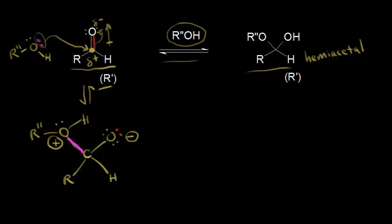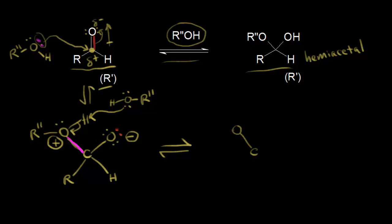The next step is to deprotonate this intermediate. We could have another molecule of alcohol, which in this case functions as a base. A lone pair of electrons on this alcohol takes this proton, leaving these electrons behind on this oxygen. So after deprotonation, our oxygen is bonded to our R double prime group, and the oxygen on the right still has a negative one formal charge. The electrons between the oxygen and the hydrogen are now on the oxygen, removing the plus one formal charge.